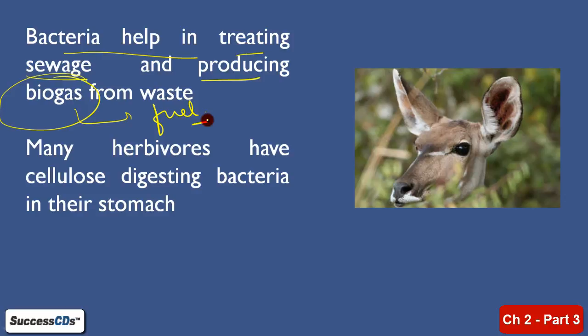So how does this biogas get produced? Biogas plants are used in sewage treatment. There, the bacteria develop and decompose the matter. And as a result, what you get is a fuel — that is biogas, a safe fuel which can be used for many purposes.